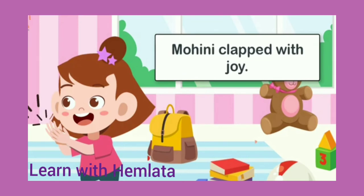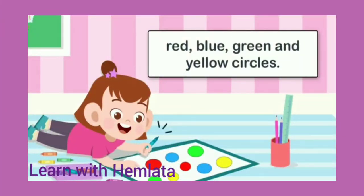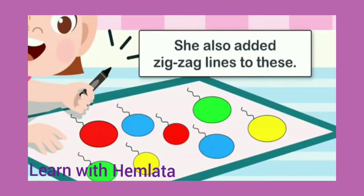Mohini clapped with joy. Then Mohini drew many circles — big and small circles. Ab Mohini ko draw karne mein bahut interest aane laga, usne kuch bade aur kuch chote circles banaye. She colored them red, blue, green, and yellow. She also added a zigzag line to each circle, converting them into balloons.